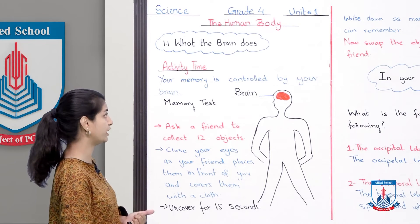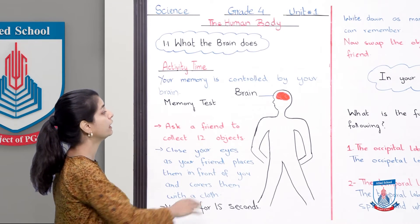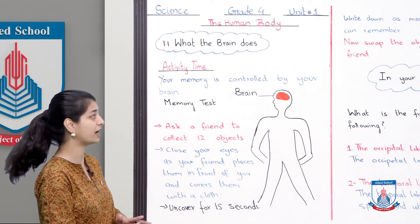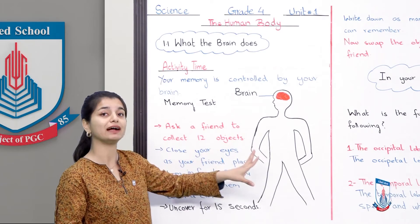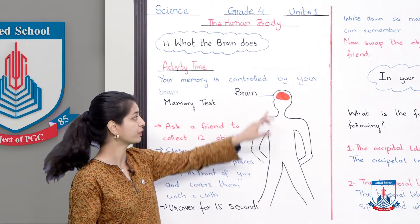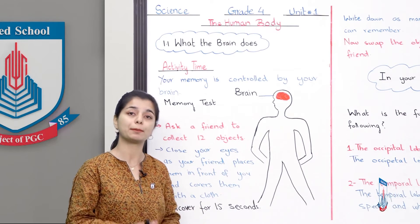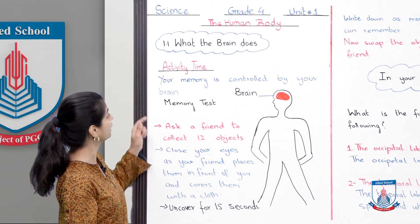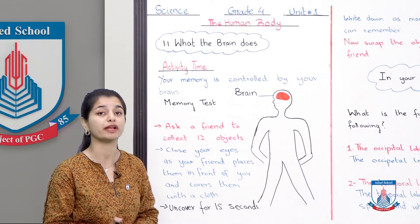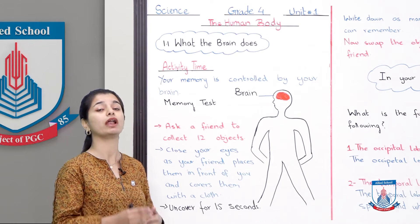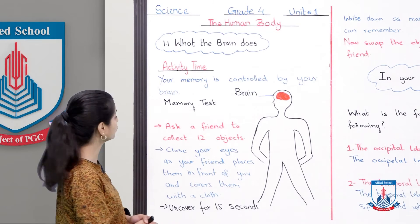Your memory is controlled by your brain. This diagram shows your brain in your body, controlling all the activities happening in your body. From head to toe, whatever actions you perform, your brain is responsible. Now first, since your memory is controlled by your brain, you will have a memory test. Through this activity you can test your memory with a friend and compare whose memory is sharper.